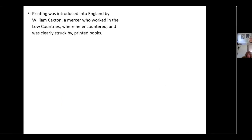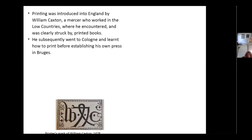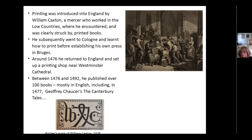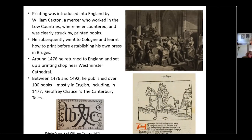Printing, as Gutenberg used, is introduced into England by Caxton. He worked in the Low Countries and was clearly impressed by printed books, so he went to Germany, to Cologne, and learned how to print, then came back to Bruges and established his own press. Back in 1476, he returned to England and set up a printing shop near Westminster Cathedral. Between 1476 and 1492 he was prolific, publishing over 100 books, mostly in English, including The Canterbury Tales in 1477 — probably one of the most famous ones he actually produced.